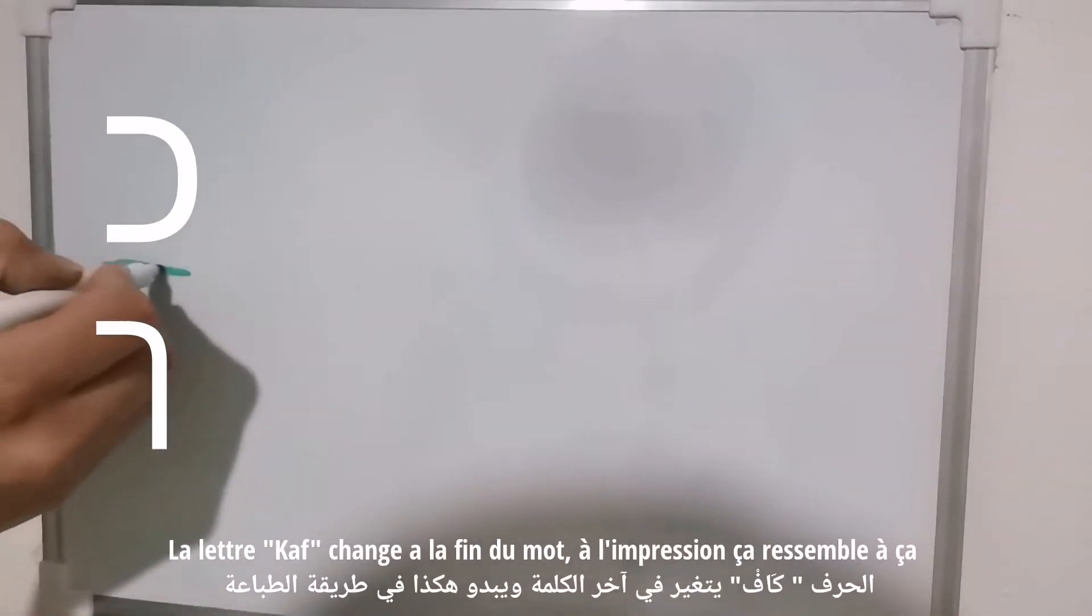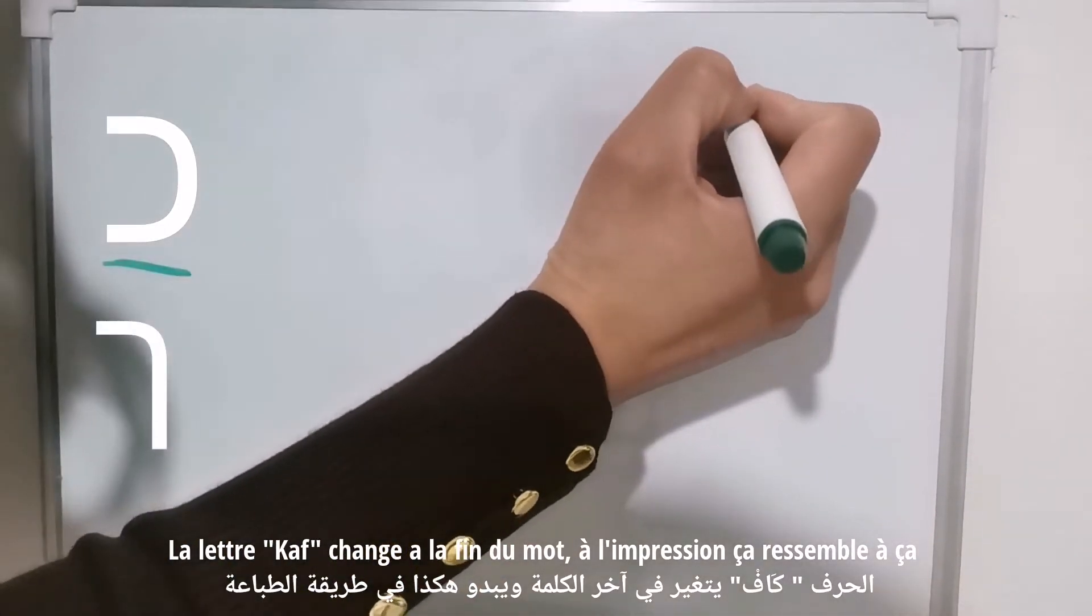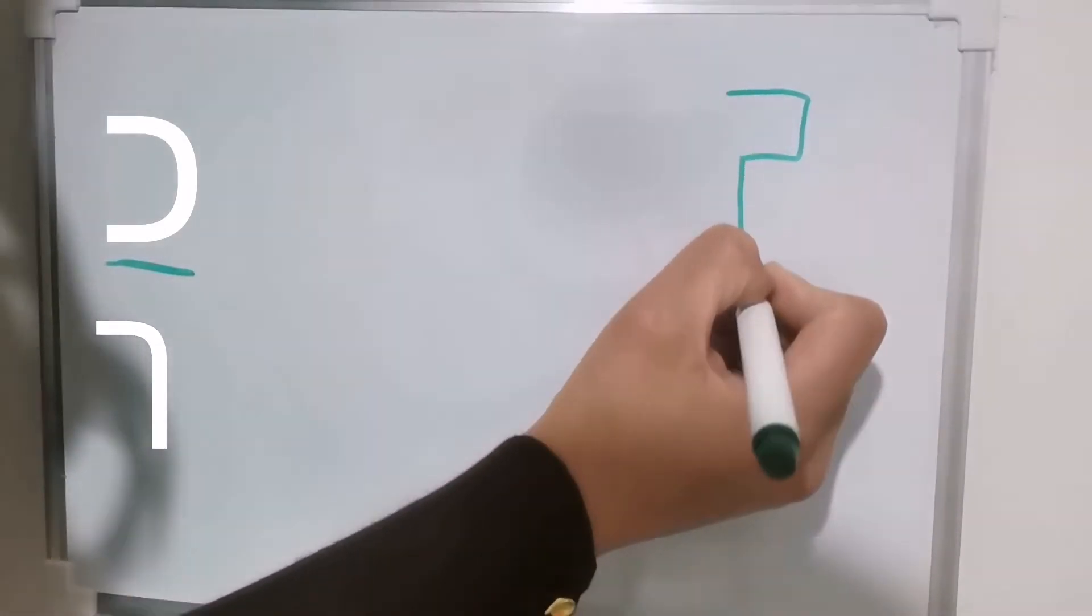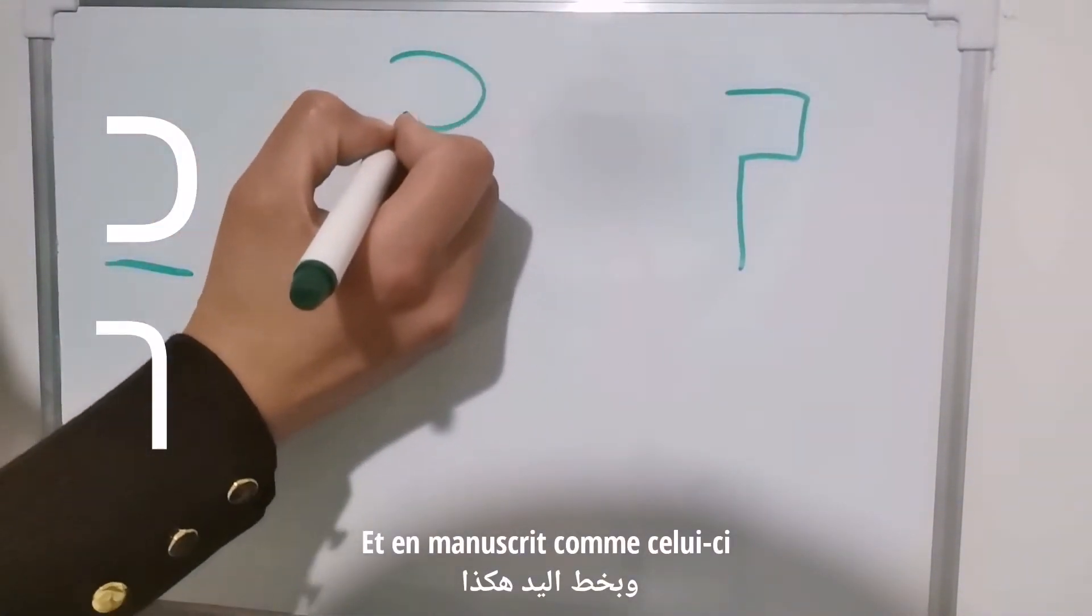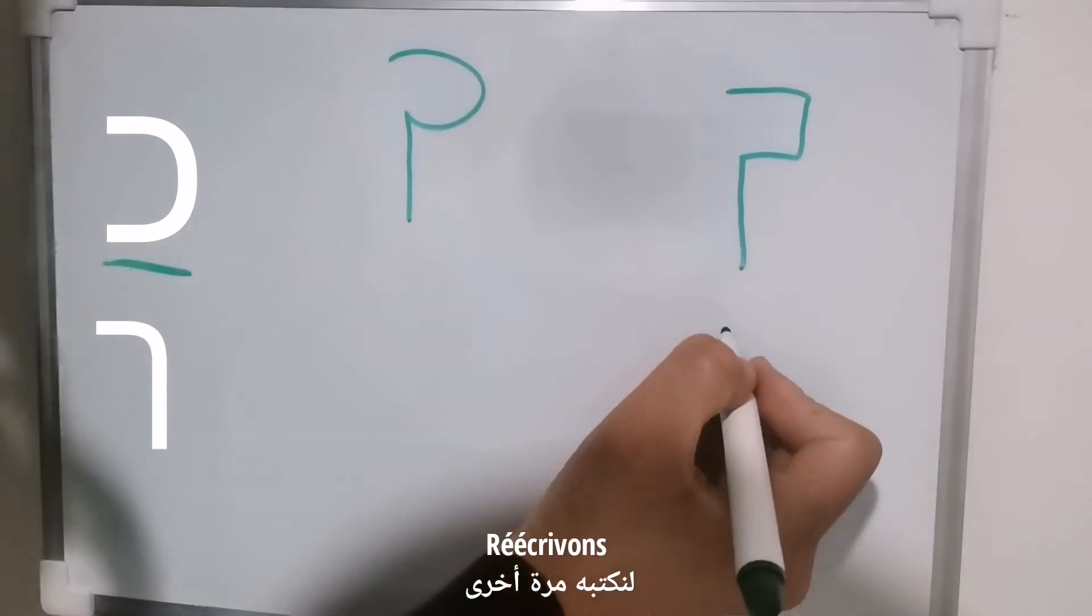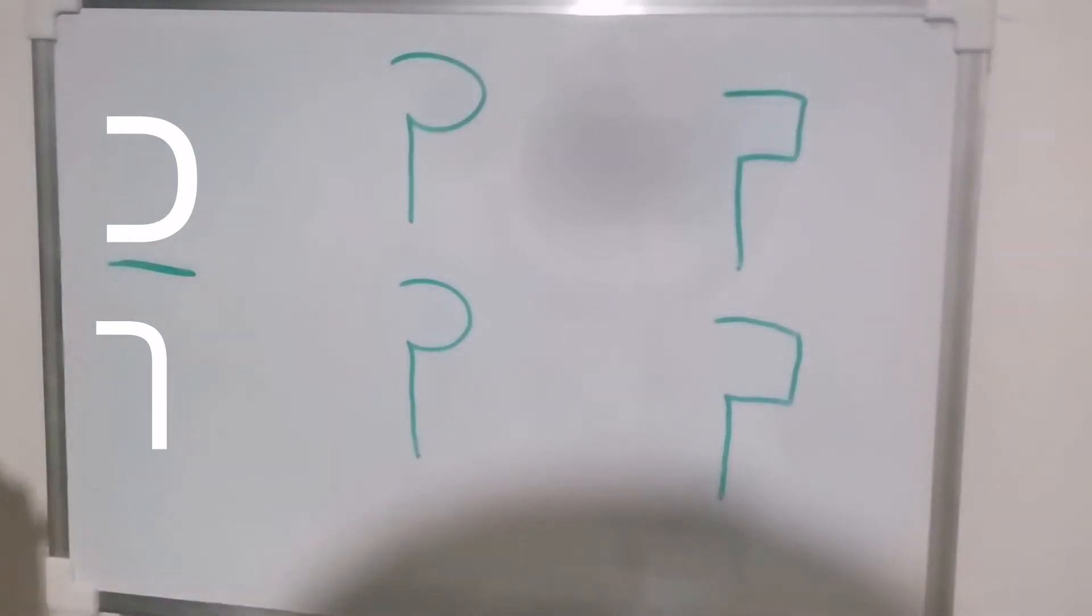The letter Kav changes at the end of the word. In print it looks like this. In script like this. Let's write it again. And it is called Kav Sofit, and you write it at the end of the word.